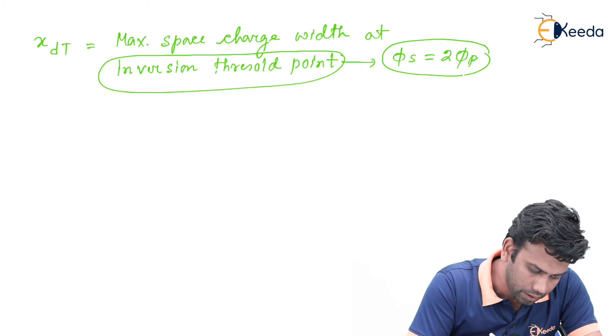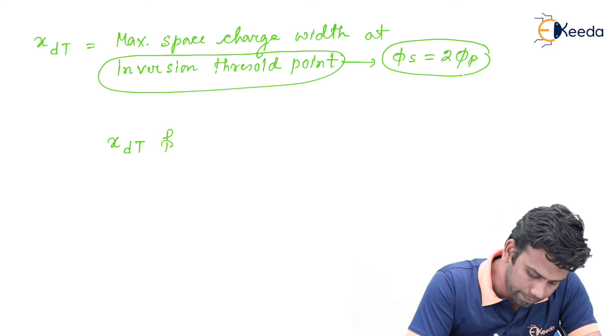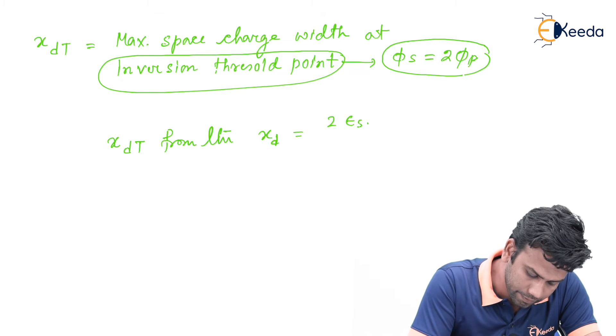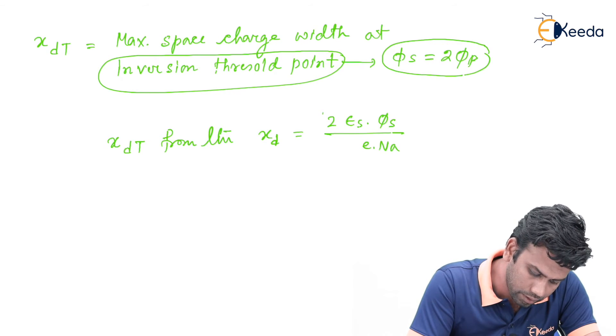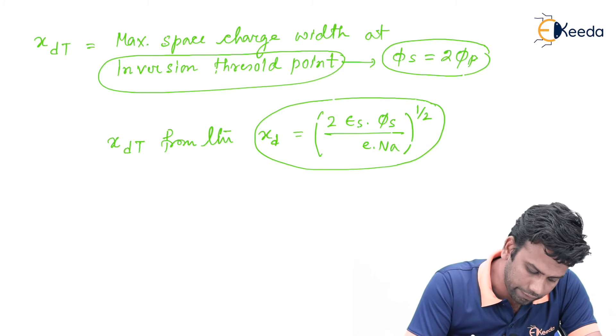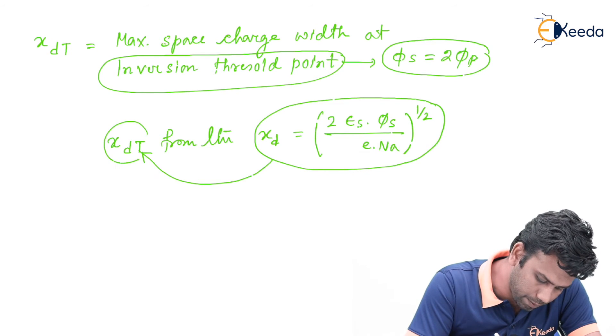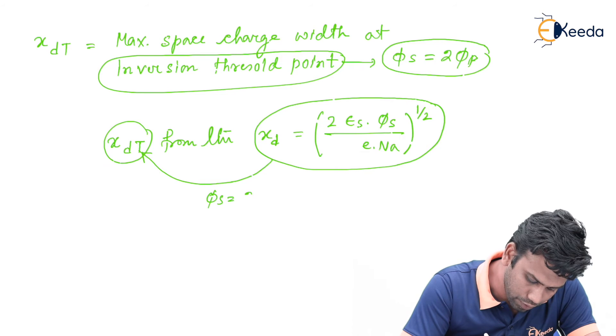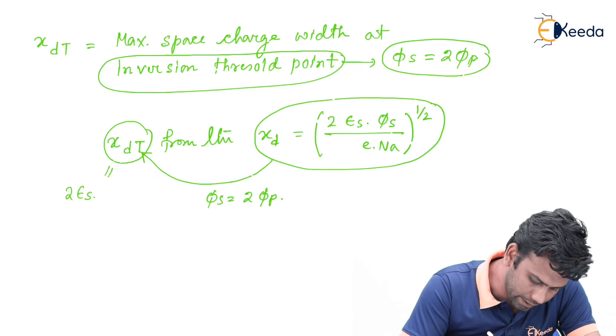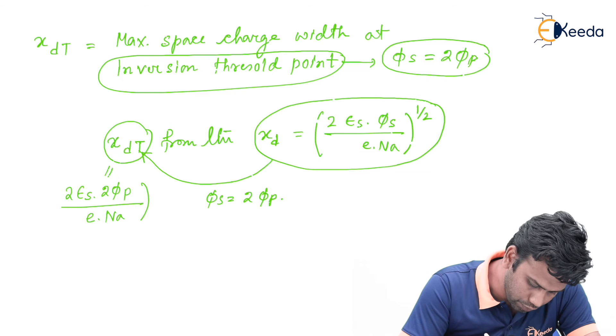At this point, if we calculate xdt, we can use the xd equation which was xd equals to 2 phi s into epsilon s divided by E into nA to the power minus half. From this equation we can calculate xdt by putting phi s equals to 2 of phi p. So the xdt equation can be written as 2 epsilon s into 2 of phi p divided by E into nA to the power half.